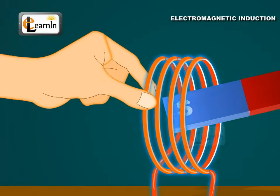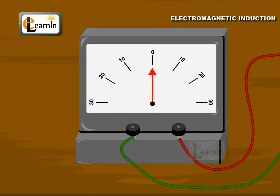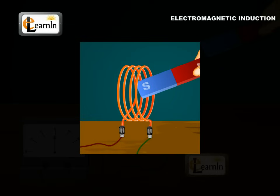Similarly, motion of the coil itself also produces deflections in the galvanometer when the magnet is kept stationary.